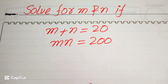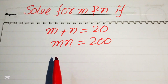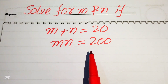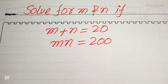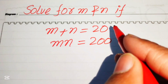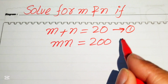Hello everyone, welcome. We will solve this algebra problem: if m plus n equals 20 and m times n equals 200, we solve for the values of m and n. The very first step is to label these as equation number one and equation number two.